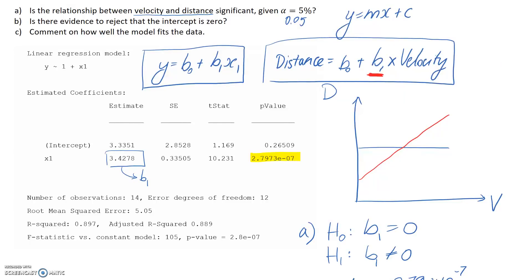So the next bit is asking us if there's evidence to reject that the intercept is 0. So if we're talking about the intercept, it's going to be the b0 in our equation. Just like in y equals mx plus c, c is the y-intercept. So what we're looking at this time is whether b0 is equal to 0, or whether it's not. And it's pretty much following the same pattern as what we did a moment ago.